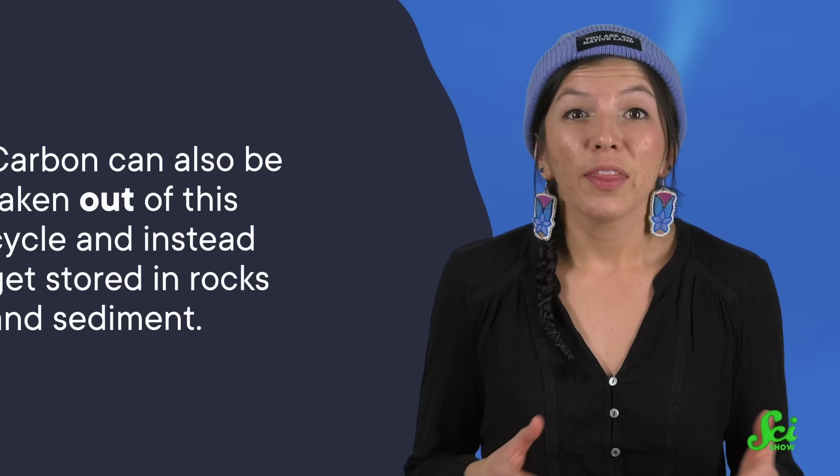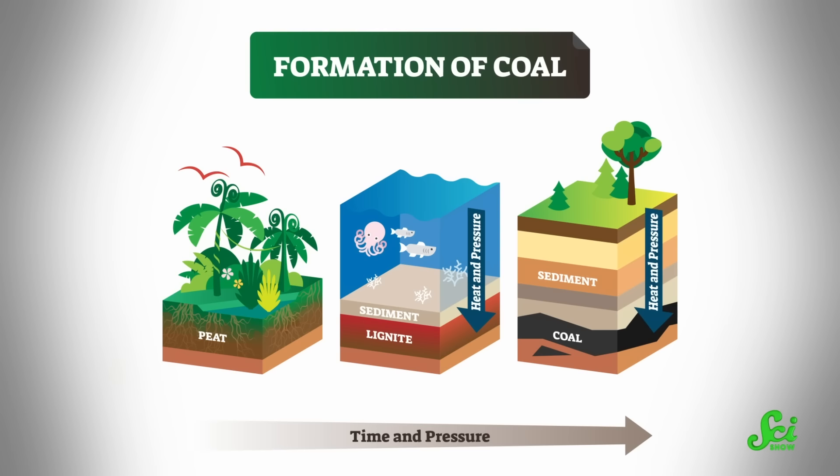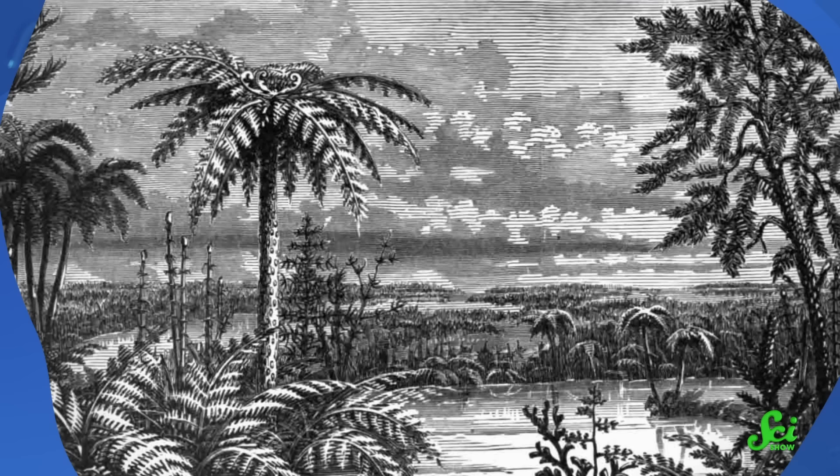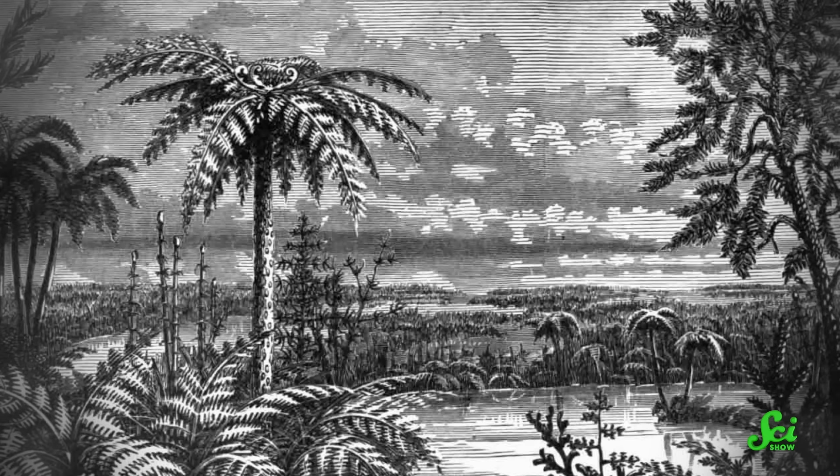But it turns out that's not the only fate of carbon in dead things. That carbon can also be taken out of this cycle and instead get stored in rocks and sediment — case in point, coal. Coal forms when carbon from organic matter accumulates in layers that are compressed over millennia into rock. The vast majority of the world's coal formed during a single geologic time period that started about 360 million years ago. So much coal formed in this period that geologists literally named it after the amount of carbon dating to this time, which is where we get the name Carboniferous. Coal really piled up because the trees and other plant life just flat out didn't break down. And there's never been a time since then where so much coal formed all at once, in lots of different places. So what gives?